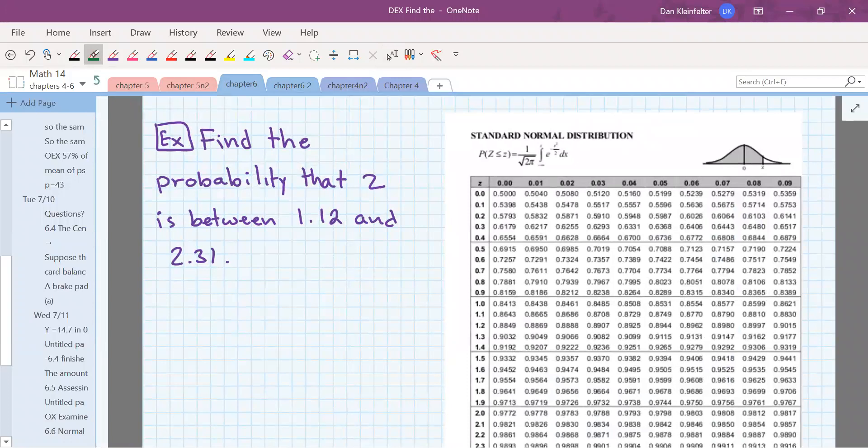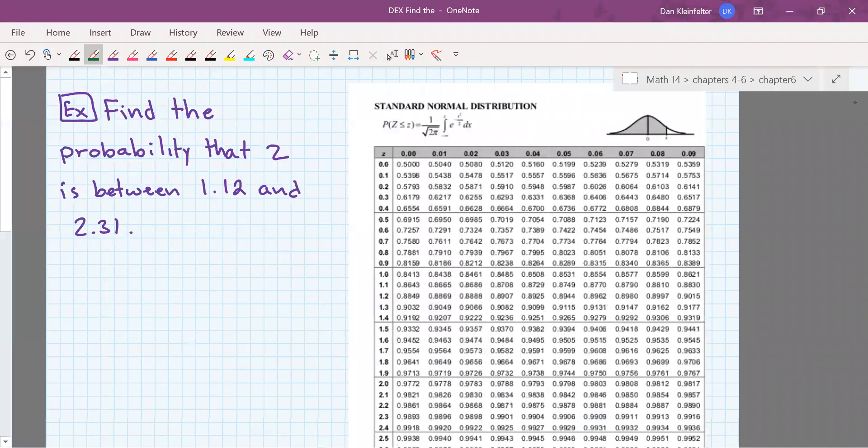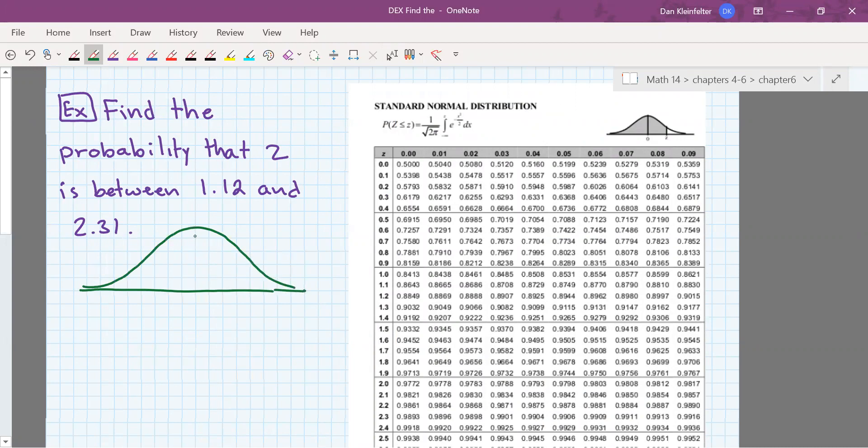In the next one we want the probability that z will be between 1.12 and 2.31. So as before, good idea to make a picture. So 1.12 is a little over one standard deviation to the right of the mean, and then 2.31 is a little bit further over.